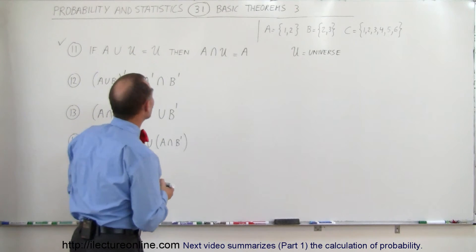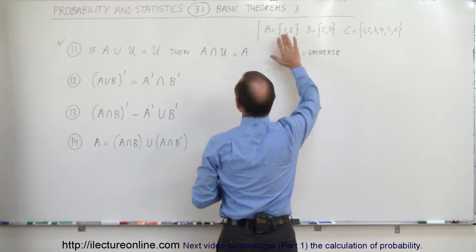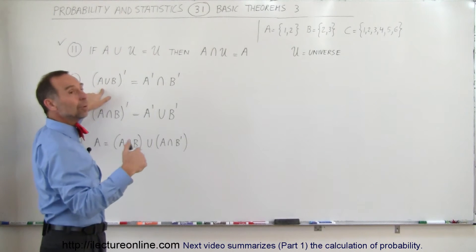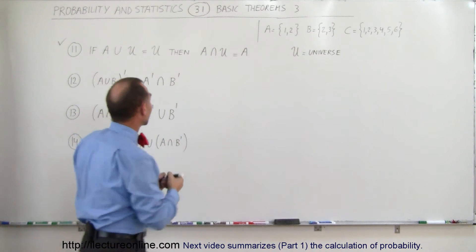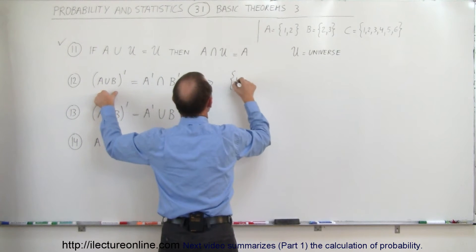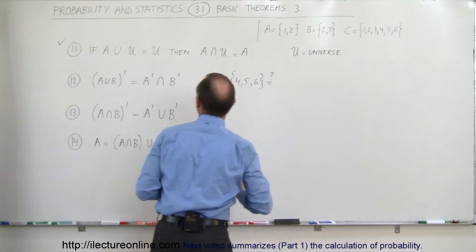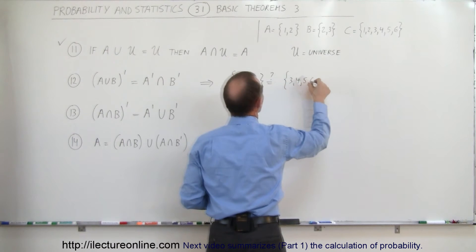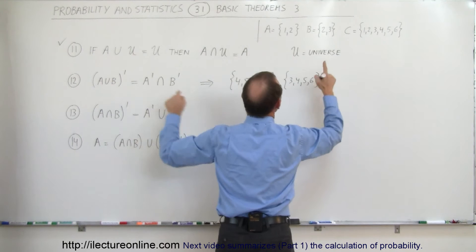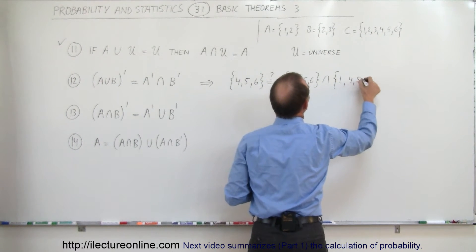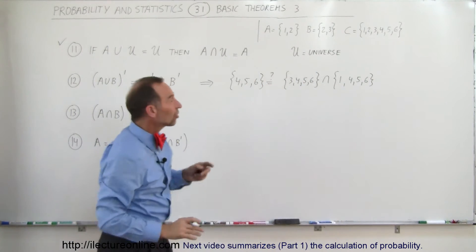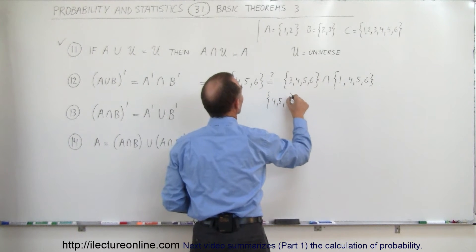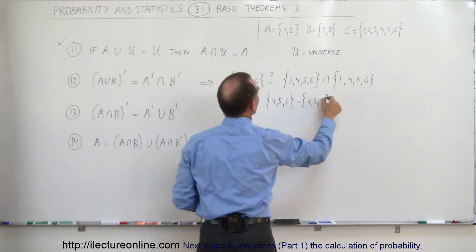A union B equals one, two, and three — everything in A and B combined. So not(A union B) is everything else: four, five, and six. Now, not-A is everything but what's in A, which is three, four, five, and six. Not-B is everything not in B: one, four, five, and six. The intersection of those two — what's common to both — is four, five, and six, which matches exactly.